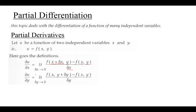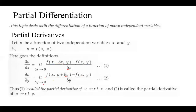Similarly, if you want to find the partial derivative of u with respect to y, the definition goes: ∂u/∂y is equal to limit delta y tends to 0, f(x, y + Δy) minus f(x, y) divided by Δy. The first equation is the partial derivative of u with respect to x, whereas the second equation is the partial derivative of u with respect to y.